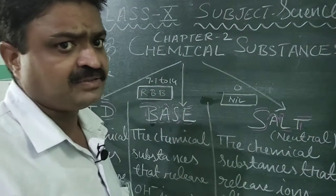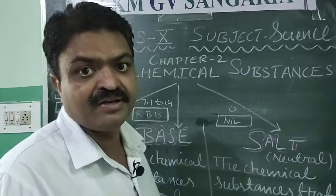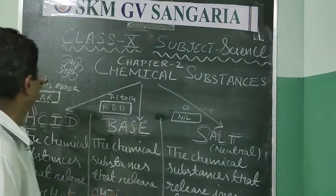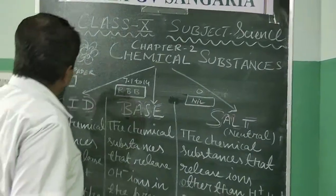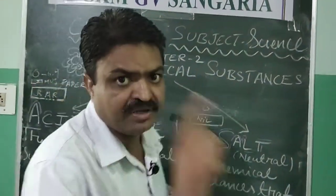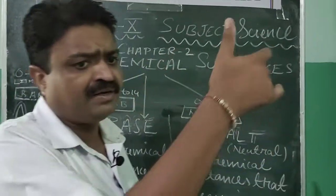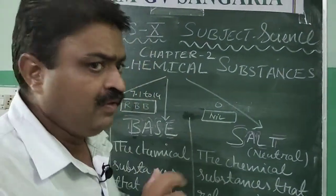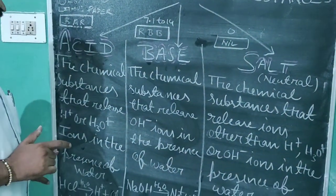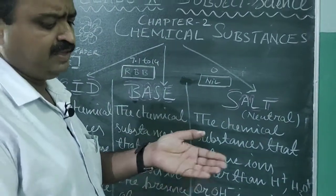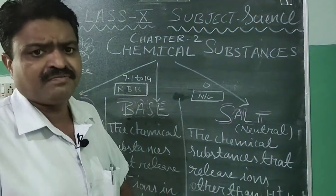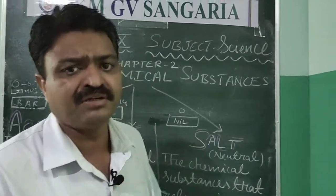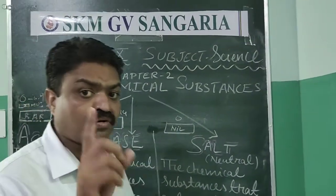Another characteristic of acids is that they have a pH between 0 and 6.9. If a chemical substance has a pH of 0 to 6.9, we can say it belongs to the acid category. Acids are also irritative or corrosive in nature — if they come in contact with our skin, they can cause irritation or corrosion.